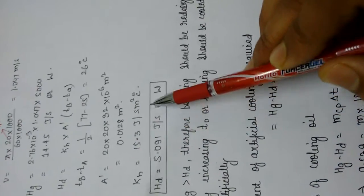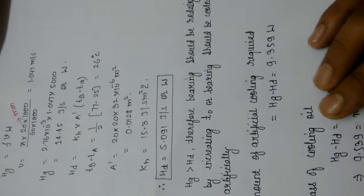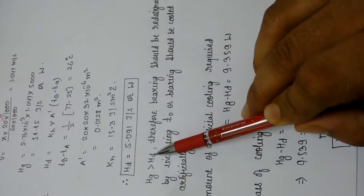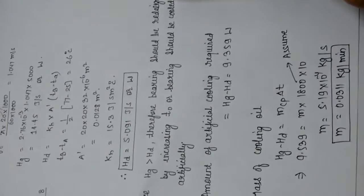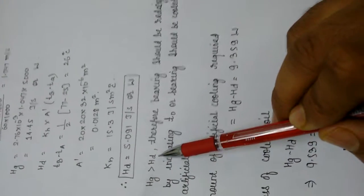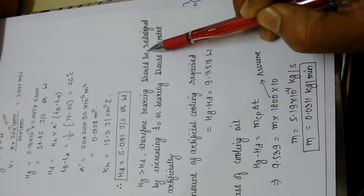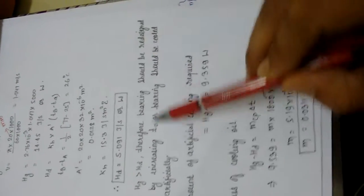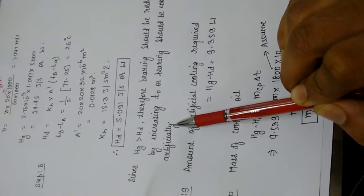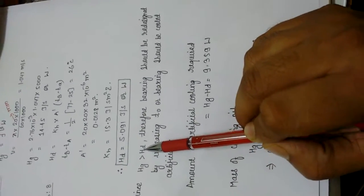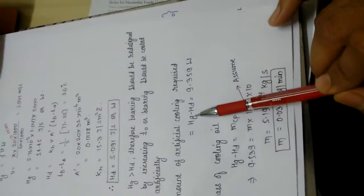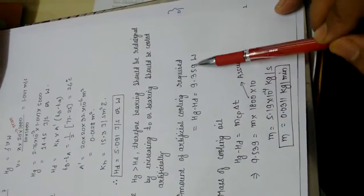Heat dissipation Hd = 5.091 Joules per second. Since Hg (14.45 J/s) is greater than Hd (5.091 J/s), the bearing must be redesigned or cooled artificially using an external cooling agent. The amount of artificial cooling required = Hg − Hd = 9.539 Joules per second.